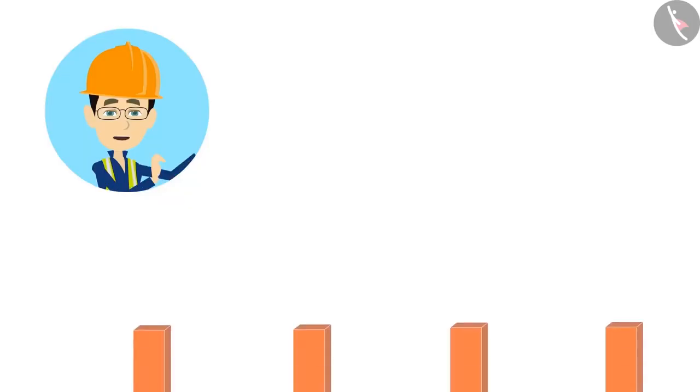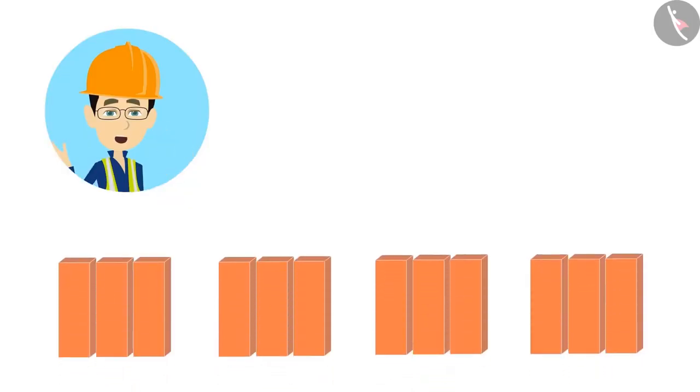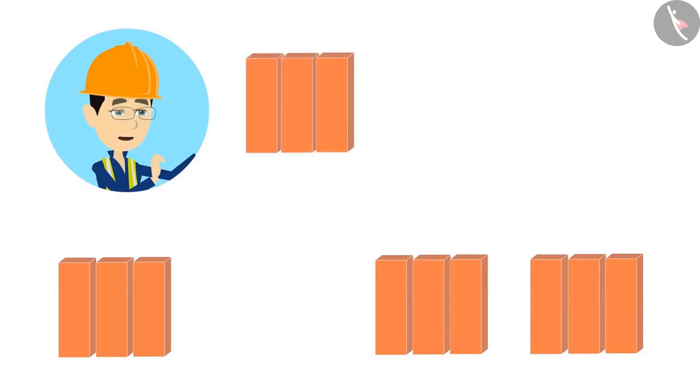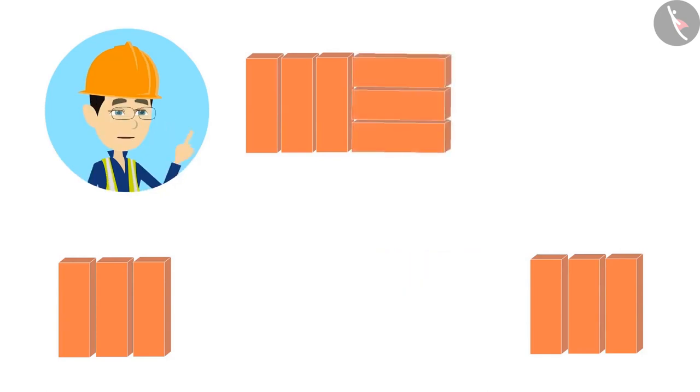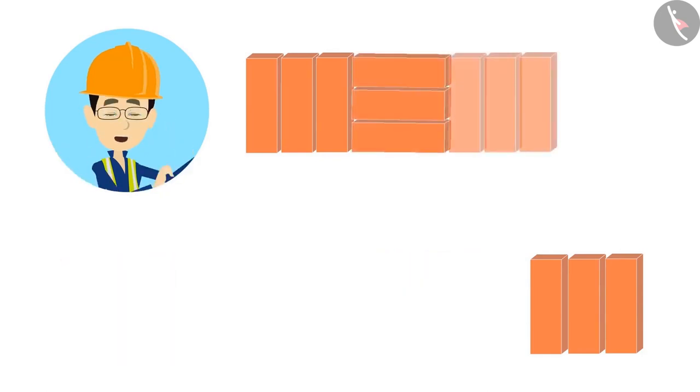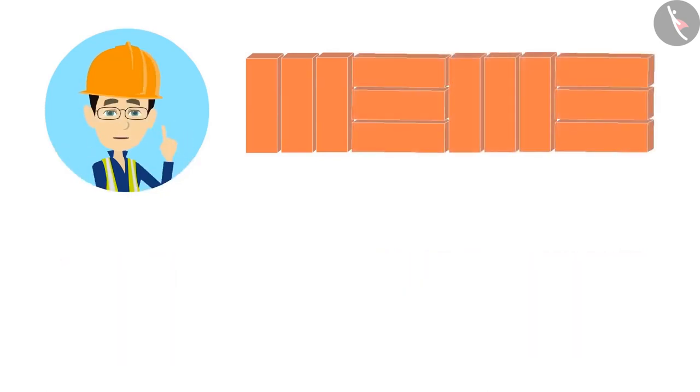See, first make groups of three bricks. Let's make the first line from these groups. For that, let's keep a group in such a way that the bricks are vertical. Then keep a different group in such a way that the bricks are horizontal. Once again, a vertical group and a horizontal group.